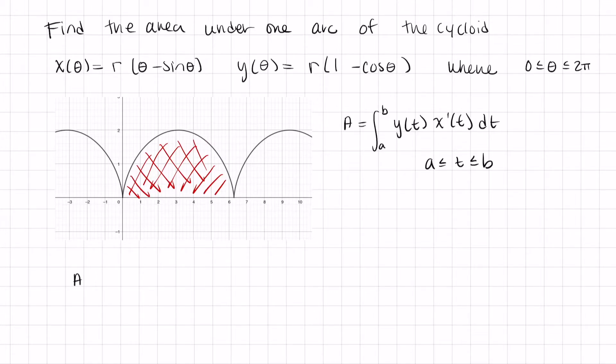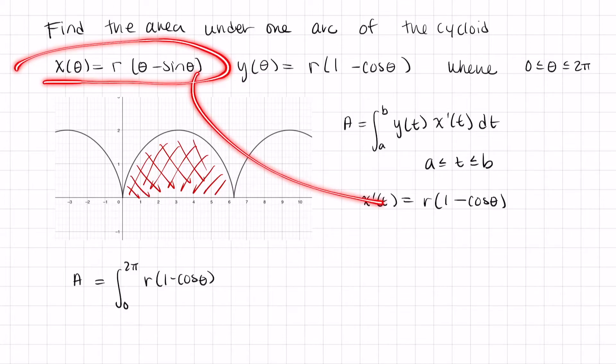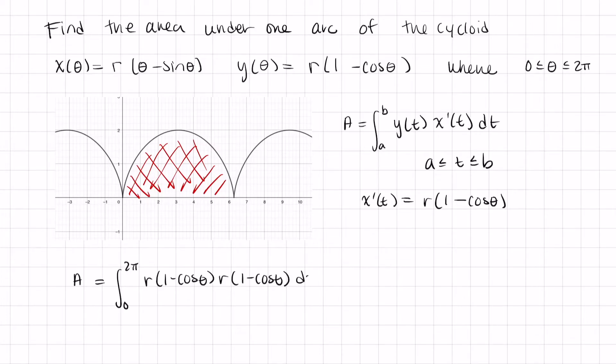So we want the area is from 0 to 2 pi, Y of T is just R 1 minus cosine theta, and X prime of T is equal to R times 1 minus cosine of theta, so that's this derivative here. So let's multiply by R times 1 minus cosine theta, D theta.